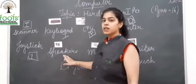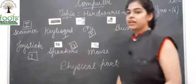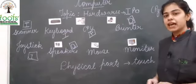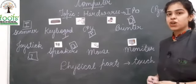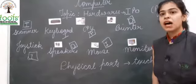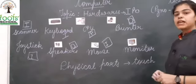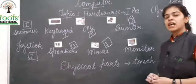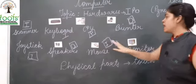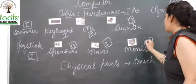Next is speaker — speaker mein se voice out aati hai computer mein se, so we classify it as an output device. Next is mouse — mouse se hum instructions deete hai computer ko, we give commands to the computer, so mouse is an input device. Next is monitor — monitor helps us to see the answer or result that the computer has processed and displays it for us, so monitor is an output device.